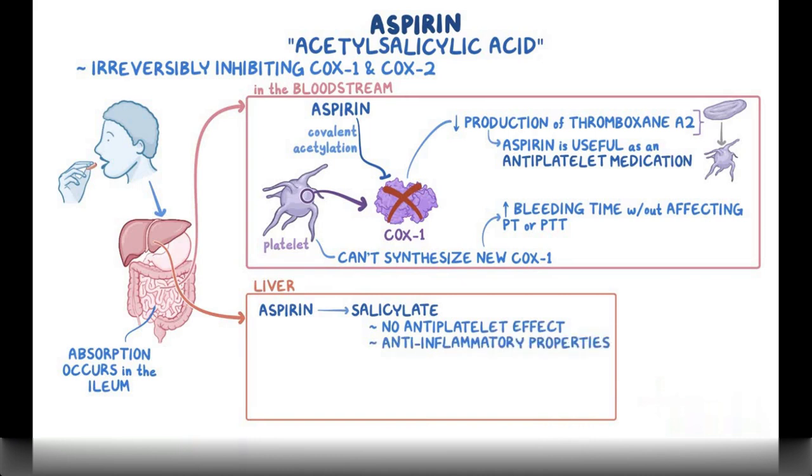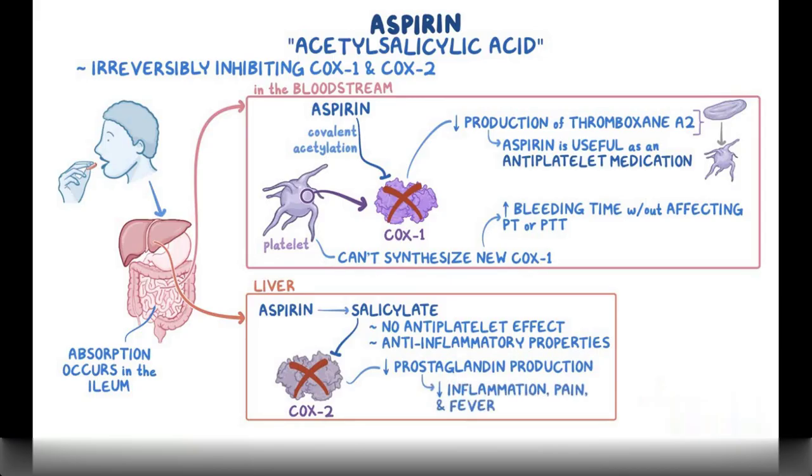Salicylate works by inhibiting COX-2, thereby reducing prostaglandin production, leading to decreased inflammation, pain, and fever. So, it's commonly used to treat headaches and musculoskeletal pain.